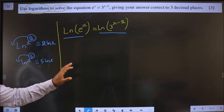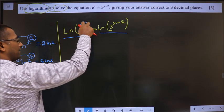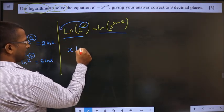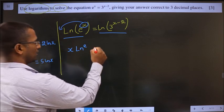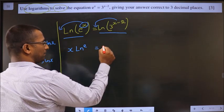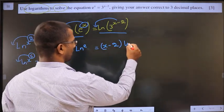Okay. Apply the same thing here. This is the power. It will come before ln resulting in x times ln e. Okay, same thing on the other side. This is the power before ln. So x minus 2 ln 3.